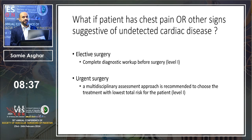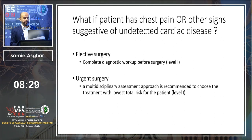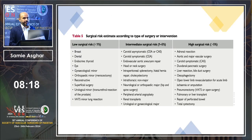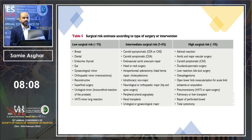If a patient has chest pain before surgery: for elective surgeries, complete diagnostic workup is required before surgery. For urgent surgeries, a multidisciplinary assessment is recommended to choose the treatment with the lowest total risk. As for which surgeries are high risk — most vascular surgeries fall between the intermediate and high-risk categories. There are no vascular surgeries in the lowest-risk group.